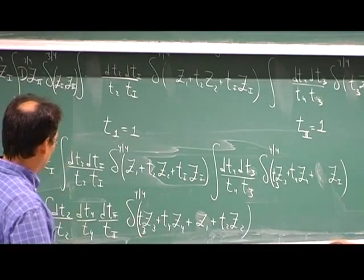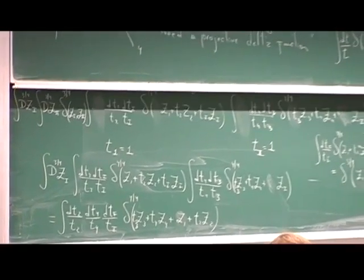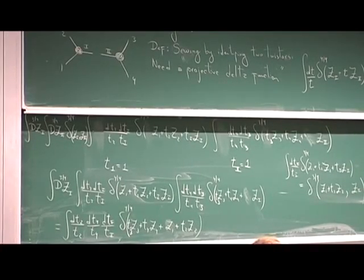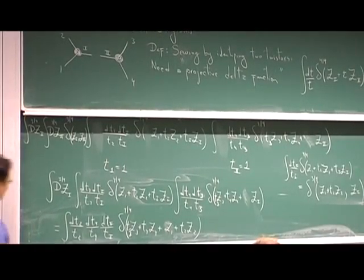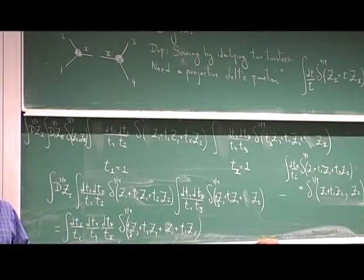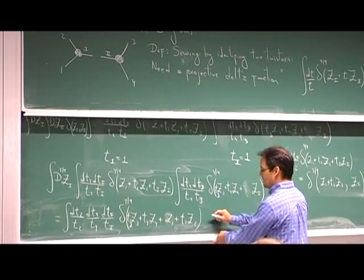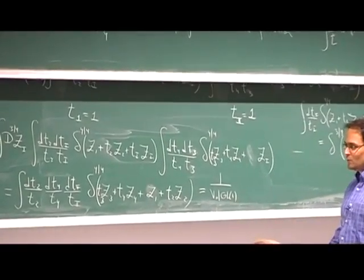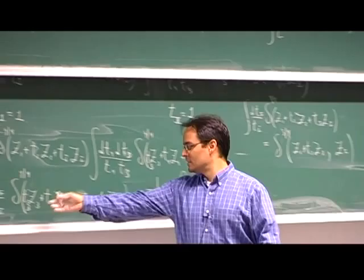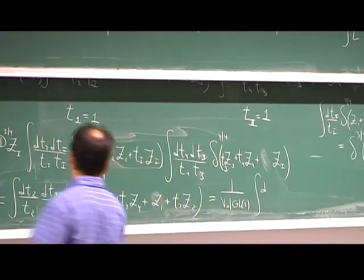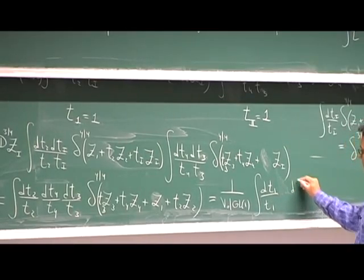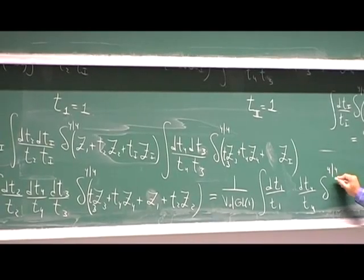What would be the next step? Excellent — introduce a redundancy. Now we're in the business of redundancies, so why not? We were already happy with a volume of GL1, so let's do it again. Let's relabel the T's. So I introduced a T1. That's our first on-shell diagram, but now we can compute an infinite number of them.